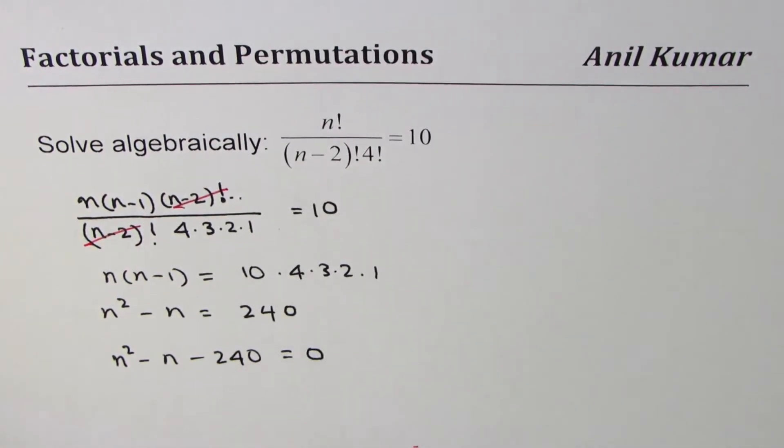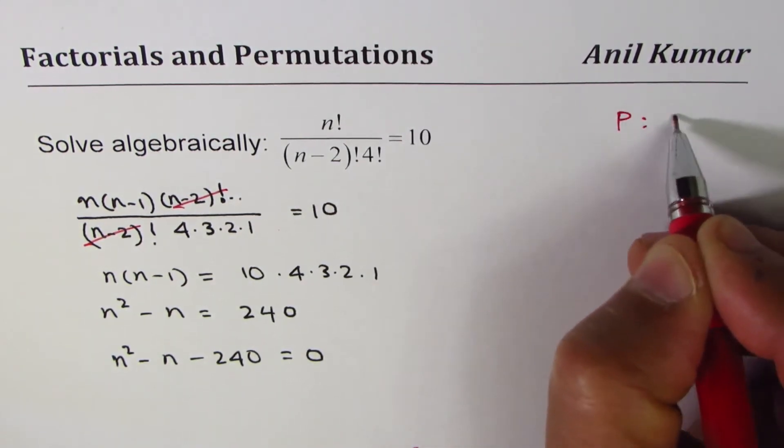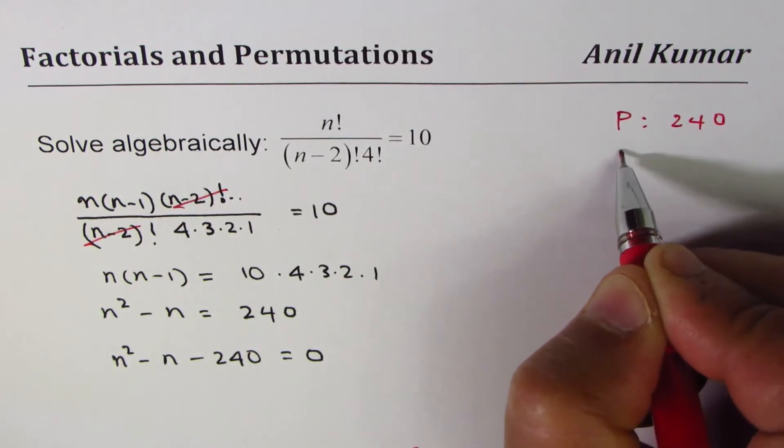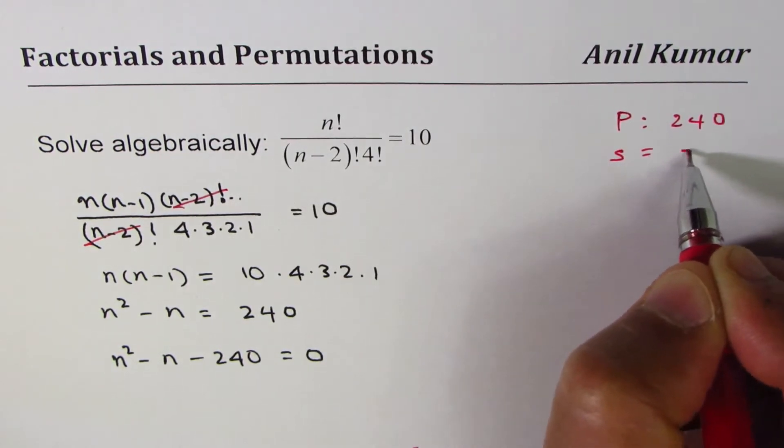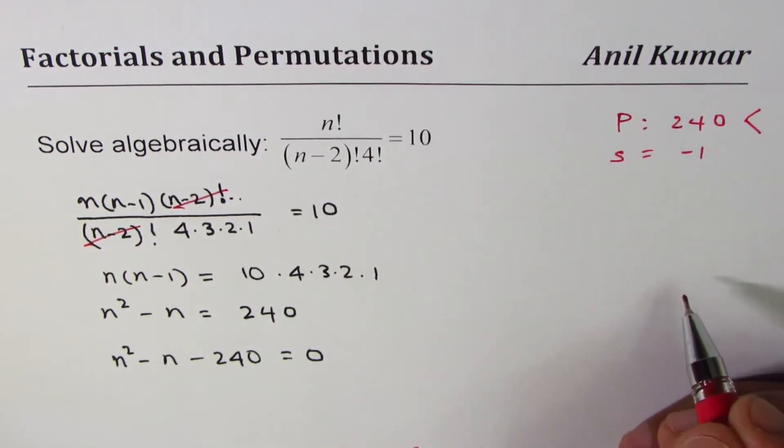Now here you can apply the quadratic formula or you can factor it. So we're looking for a product of 240 and sum of minus 1.